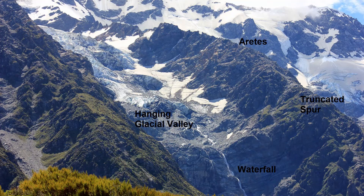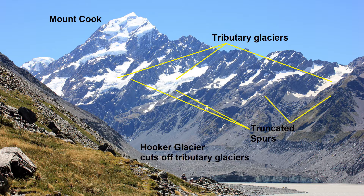The valley sides may also have truncated spurs, which are the ends of sloping ridges that have been cut off or truncated by the valley glacier, which flows straighter than a river would. You can see these features in this diagram.